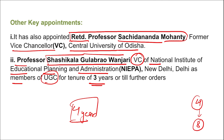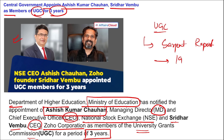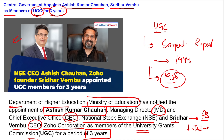UGC — University Grants Commission — was formed under the Sergeant Report of 1944 and was established in 1956. Notably, Shridhar Vembu, CEO of Zoho Corporation, was honored with Padma Shri — the fourth highest civilian honor in India — for Trade and Industry in 2021. The Chairman of UGC is M.J. Kumar — that is Mamidala Jagadesh Kumar — and the headquarters is in New Delhi.